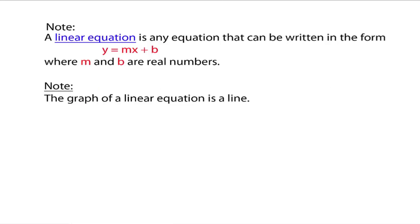Now let's talk about linear equations. A linear equation is any equation that can be written in the form y equals mx plus b, where m and b are real numbers. m is the coefficient of x, and b is the constant. For example, y equals negative 2x minus 1 is a linear equation — m is negative 2 and b is negative 1. The graph of a linear equation always graphs to be a line.